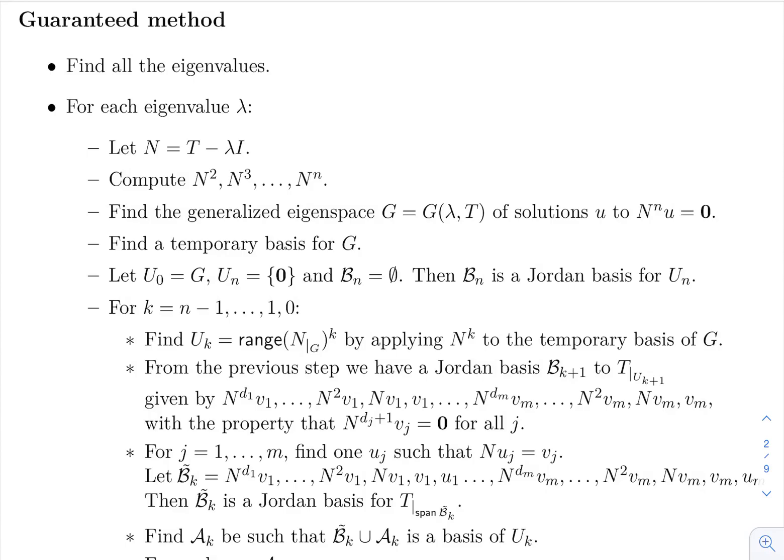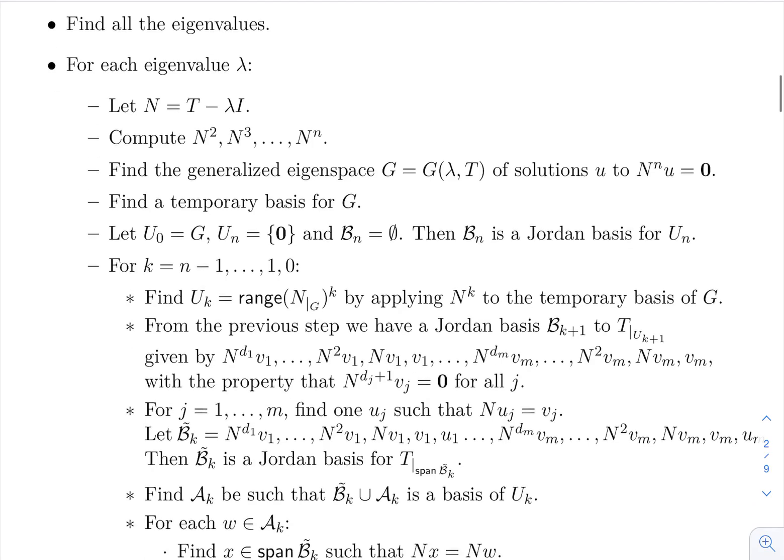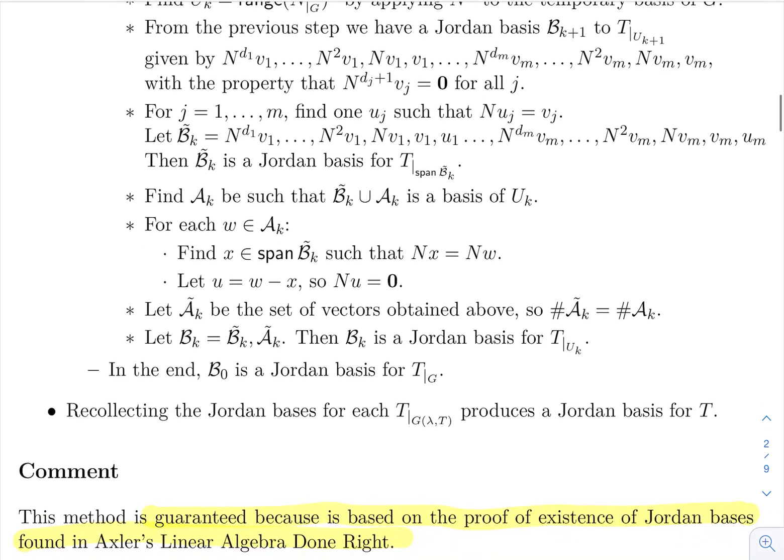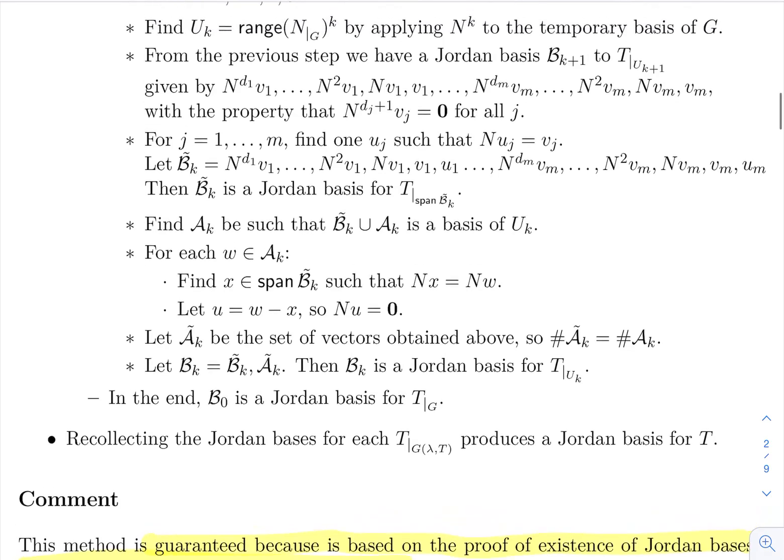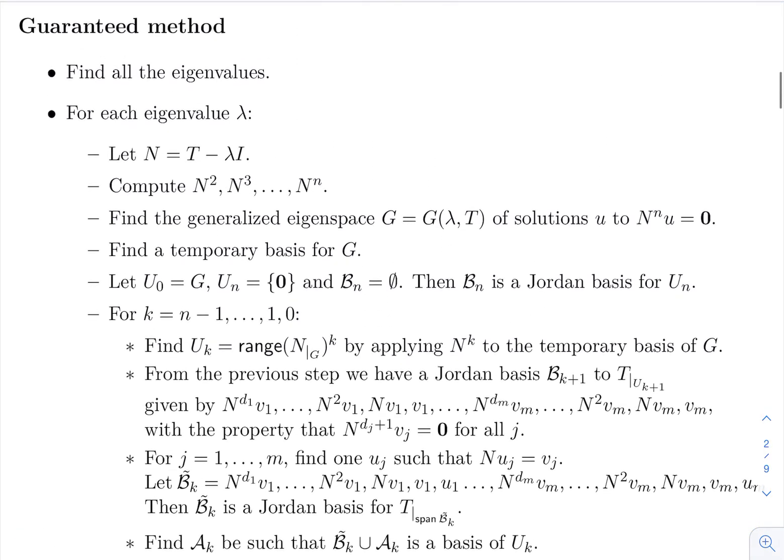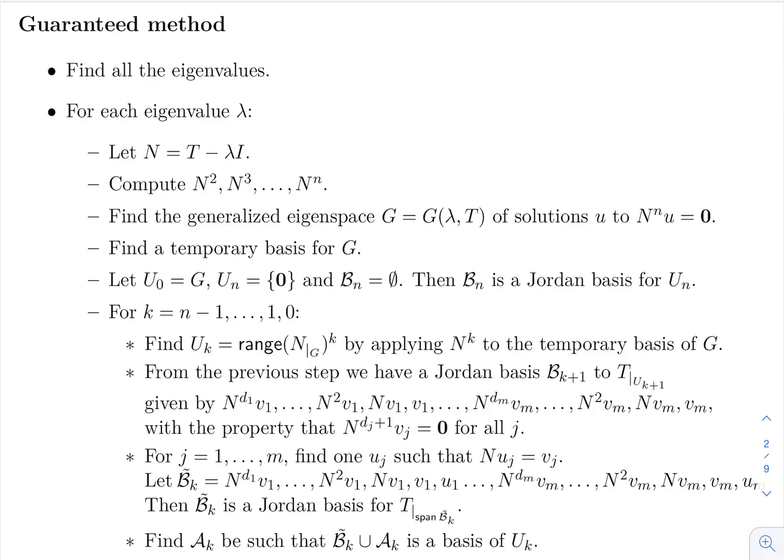Here is a method which is guaranteed to work. Let me start from the end and say why it is guaranteed to work, because it is based on the proof of existence of a Jordan basis that you can find in Sheldon Axler's Linear Algebra Done Right book, which you can also see in a previous video from this series, where we prove existence of a Jordan basis for a nilpotent operator, and from there, how you can prove existence of Jordan basis for any complex operator.